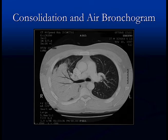Another change we look for in consolidation with airspace disease is an air bronchogram. Here a lobar pneumonia shows the bronchus coming out into the pneumonia and branching — those black branching lines are called an air bronchogram, which is another characteristic of airspace consolidation.